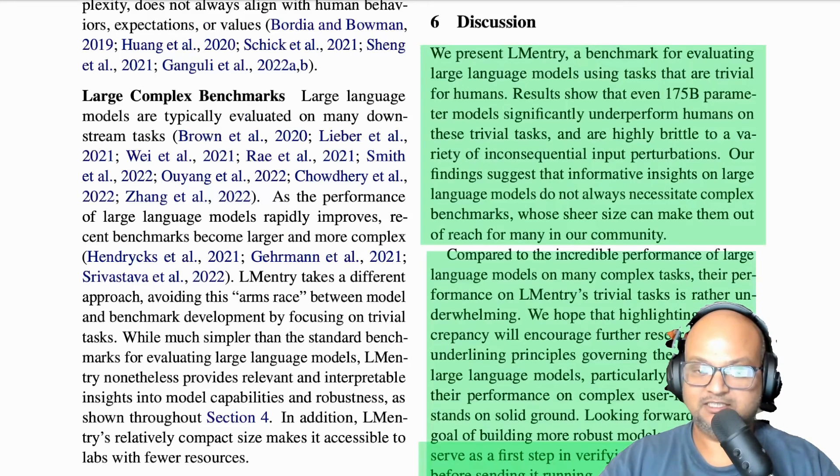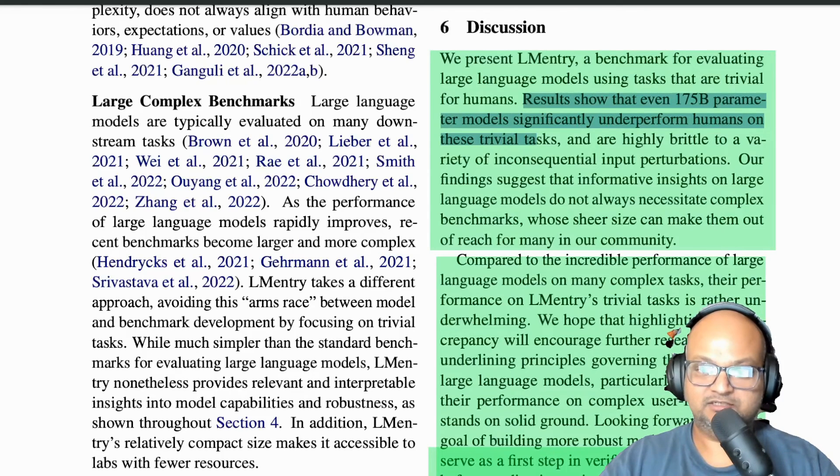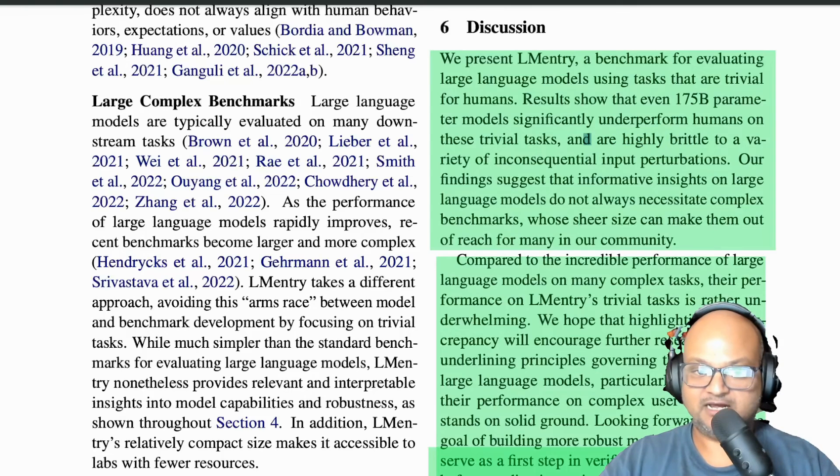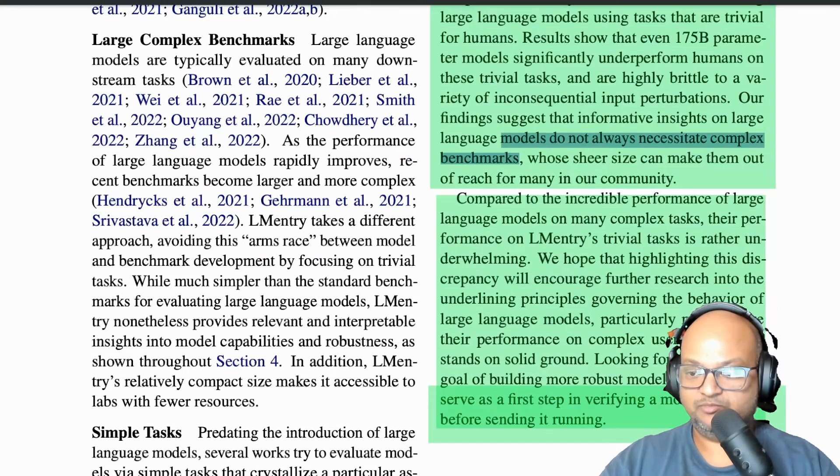So what does this tell us? This is a really simple benchmark. It consists of very simple tasks, elementary school level tasks, and they find that even the largest models underperform humans significantly on these trivial tasks. And moreover, even changing the tasks, which they try to measure as robustness, makes the performance very brittle. So the authors achieved what they set out to do, which was to show that you don't need a large, complex, and broad benchmark to be able to find the strengths and weaknesses of these large language models. You can actually find that out with a much smaller benchmark consisting of much simpler tasks.